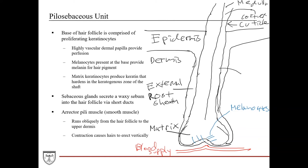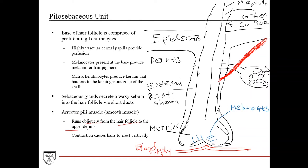The sebaceous glands have short ducts and create a substance called sebum — a waxy, oily type substance that secretes onto the hair. The last structure in the pylosebaceous unit is a smooth muscle called the erector pili muscle. It runs obliquely from the hair follicle to the upper dermis, and contraction of it causes the hairs to erect vertically — causing goosebumps, where your hairs all stand up straight. That is your erector pili muscle contracting.